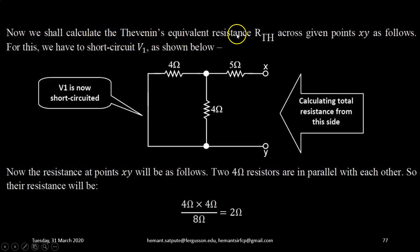Now we will calculate the Thevenin's equivalent resistance Rth across the given points X and Y. So for this procedure is short the voltage source V1 as shown. So the circuit will look like this. So we are calculating total resistance from right side. Now the resistance at point X and Y, resistance looking through the points X and Y will be two 4 ohm resistors will be in parallel with each other. So their resistance will be 4 ohm in parallel with 4 ohm that is 4 into 4 upon 4 plus 4 that is 2 ohm.